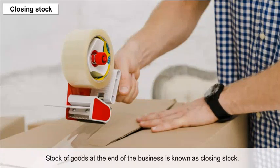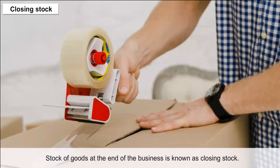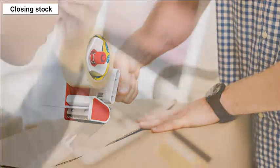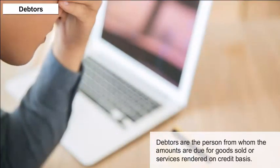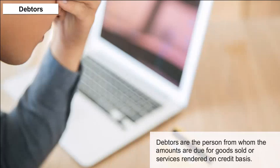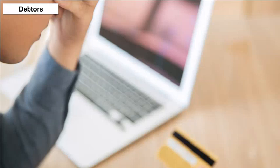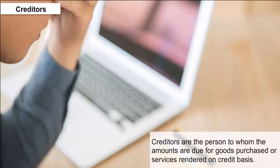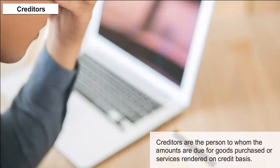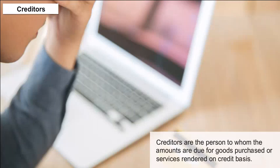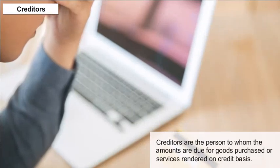Debtors: Debtors are the persons from whom amounts are due for goods sold or services rendered on a credit basis. Creditors: Creditors are the persons to whom amounts are due for goods purchased or services rendered on a credit basis.